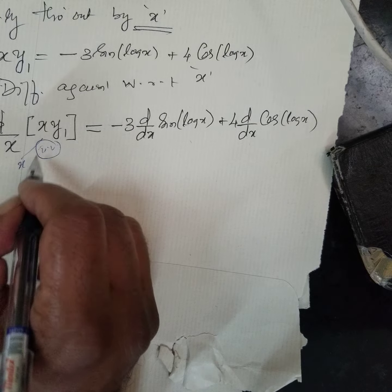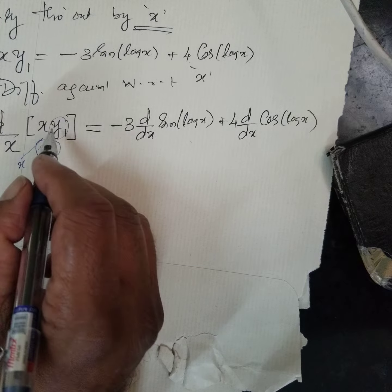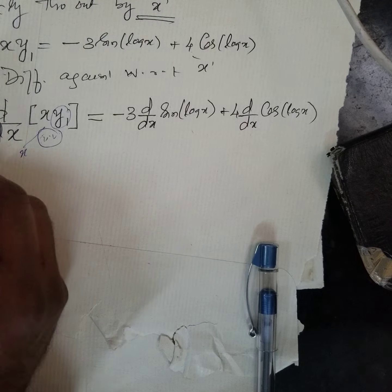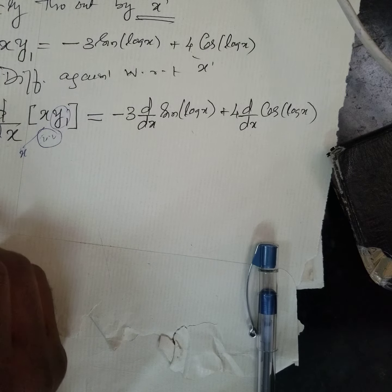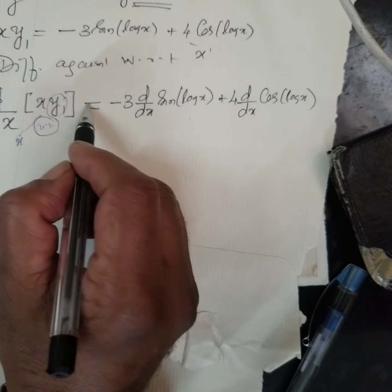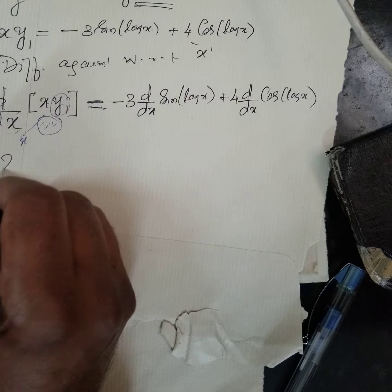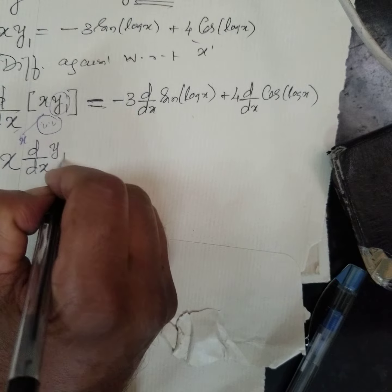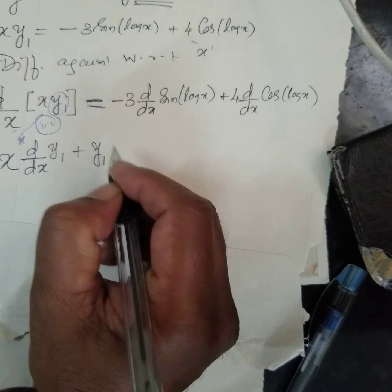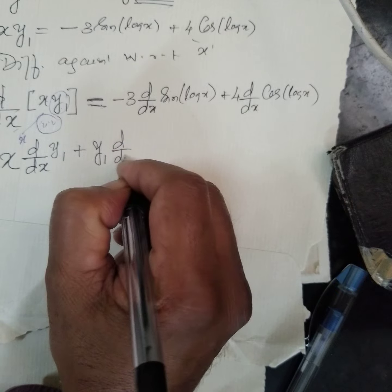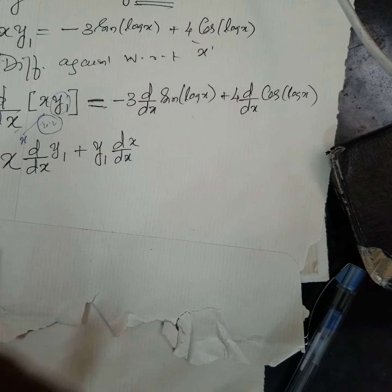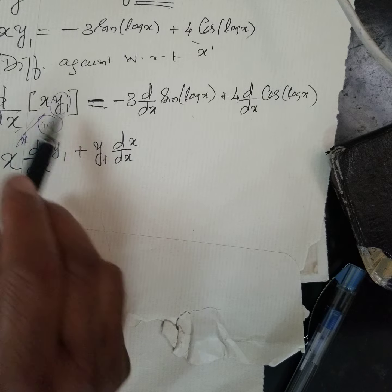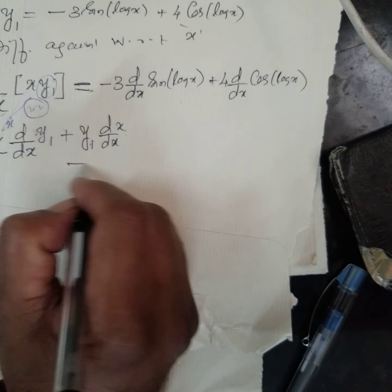Therefore, you keep u, differentiate this, then you keep that one and differentiate. Therefore here, u into v, you keep this, differentiate y1, plus keep y1, differentiate x. You understand? You keep this, differentiate this. Then again, you keep this outside, differentiate that.